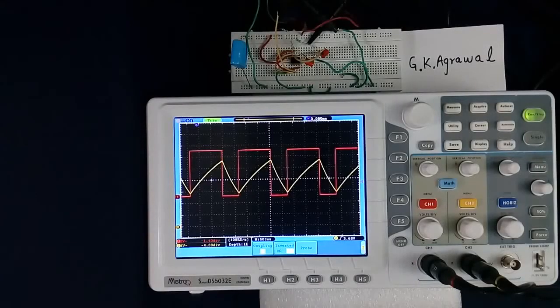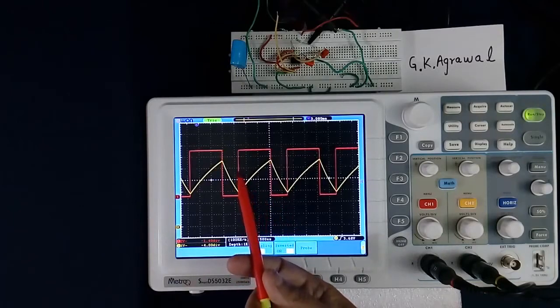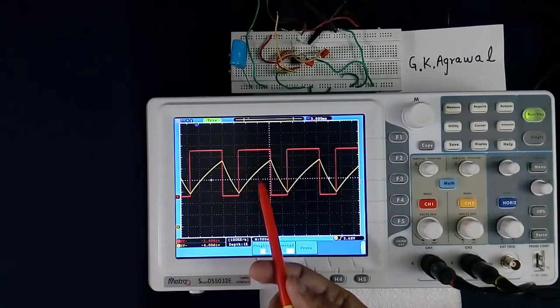Now we will learn how to compare two waveforms. For comparing two waveforms, one is red color channel 1, one is yellow color channel 2.